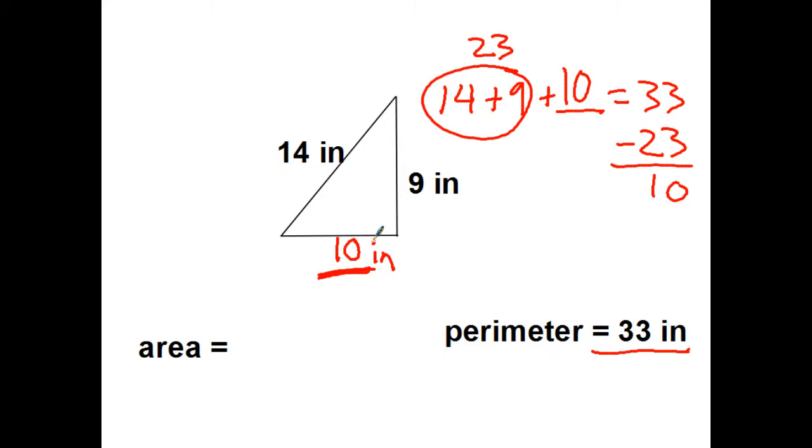Now that I have that side, I should be able to do the area, which is half base times height. Half of 10 is 5. Take it times the other side, which is 9. 45 square inches.